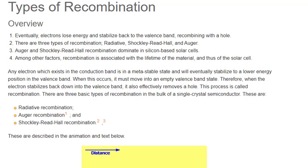Recombination is the opposite process to generation. An electron recombines with a hole and gives up the energy to produce either heat or light. A device where recombination is optimized to give off light is called a light emitting diode (LED). Eventually electrons lose energy and stabilize back to the valence band, recombining with a hole. There are three types of recombination: radiative, Shockley-Reed-Hall, and Auger.